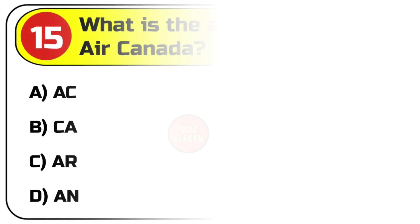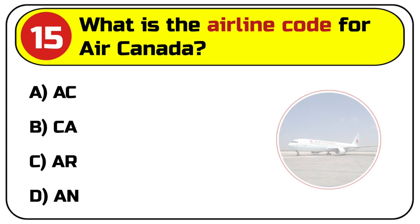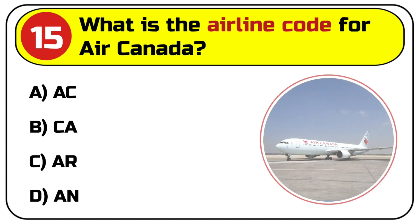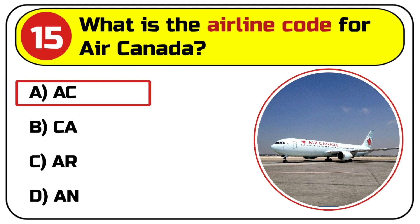Question number fifteen: what is the airline code for Air Canada? Options are A. AC, B. CA, C. AR, D. AN. Correct answer is A. AC.